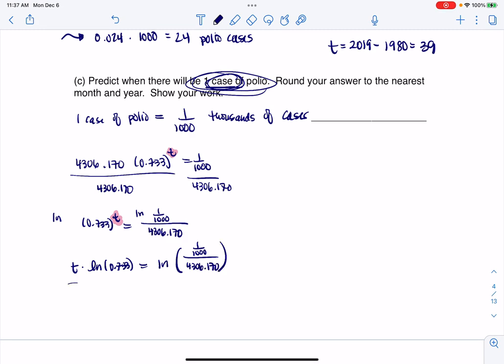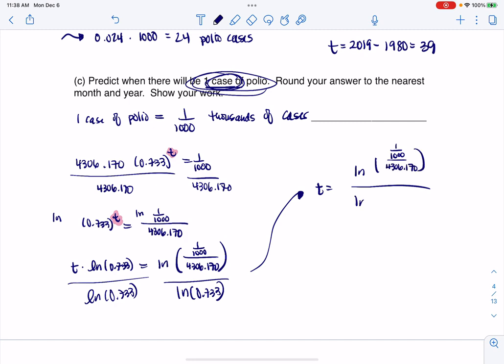I know T times ln of 0.733 is going to equal the natural log of one over a thousand divided by 4306.170. If I want to solve for T, I'm going to divide both sides by ln of 0.733. I know this is a lot, and we're just going to enter all this in our calculator because it's a bunch of number crunching. T is going to equal this ratio of the natural log of 1 over a thousand divided by 4306.170, and then the natural log of 0.733.